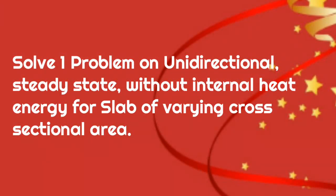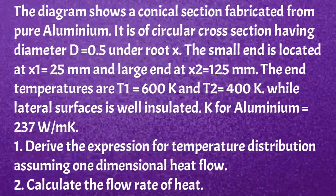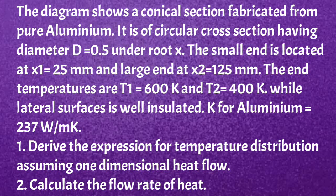We will solve a problem for unidirectional steady state heat conduction without internal heat generation for a slab of varying cross-sectional area. The diagram shows a conical section fabricated from pure aluminum with circular cross section having diameter D equal to 0.5 times the square root of X. The small end is at X1 equal to 25 mm and the large end at X2 equal to 125 mm. End temperatures are T1 = 600 K and T2 = 400 K, with the lateral surface well insulated. K of aluminum is 237 W/m·K. We need to derive the temperature distribution and calculate the heat flow rate.